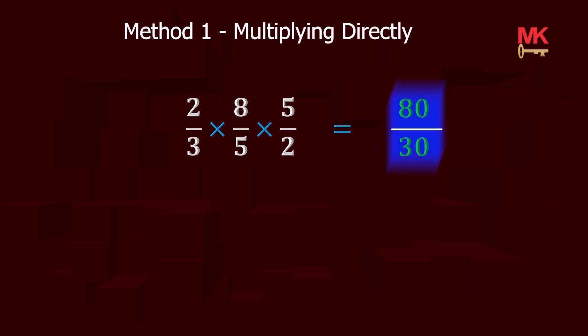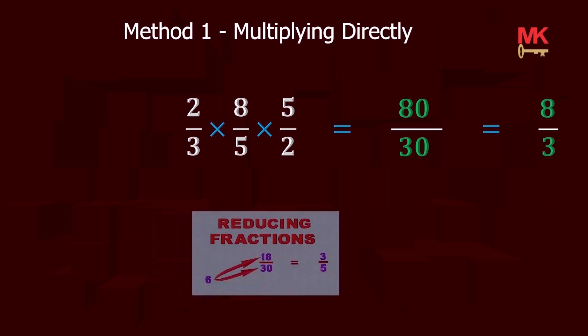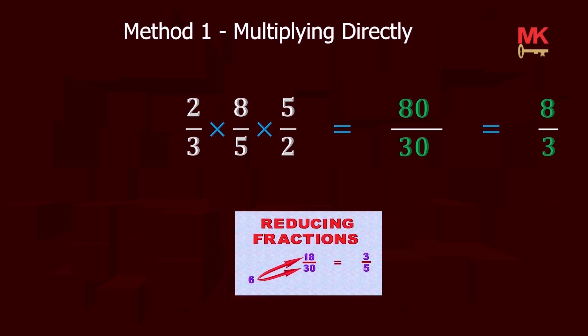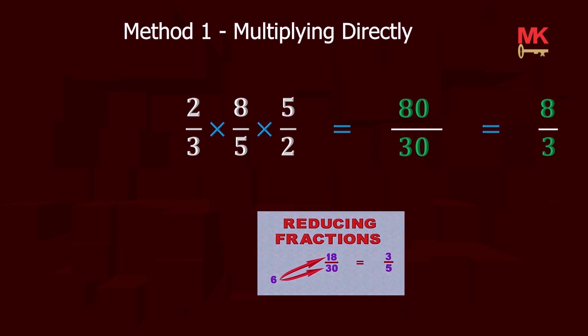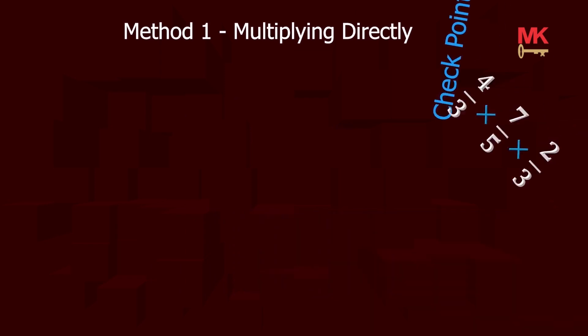Therefore, we have 80 over 30 which eventually reduces to 8 over 3. To learn how to reduce fractions to lowest terms, watch this video. Alright, now it's your turn. Feel free to pause the video at this point and try this by yourself.